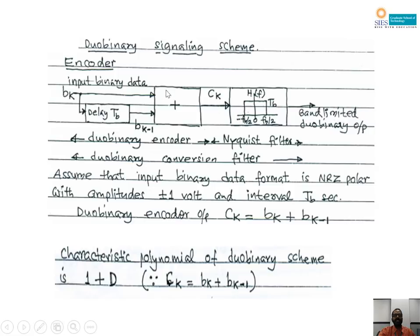Examples of this addition: if the inputs are +1 and +1, output will be +2; if inputs are -1 and -1, output will be -2; if the input is +1 and -1, output will be 0. Due to the NRZ polar input format, output voltages are ±2 V or 0 V. If inputs are the same polarity, output will be +2 or -2 voltage. This Ck passes through a Nyquist filter with a bandwidth of Fb/2 Hz — a rectangular sharp cutoff filter, which is not realizable. The combination of the duo binary encoder and Nyquist filter is known as the duo binary conversion filter, which is a cosine filter — a realizable filter — and the bandwidth needed is only Fb/2 Hz.